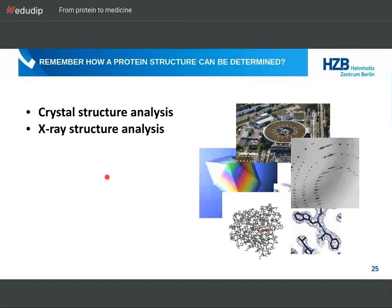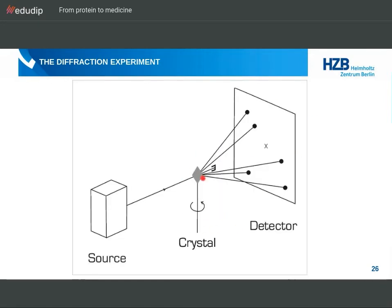Coming back to the two keywords — crystal and X-ray — we now bring them together. We take our protein crystal and shine synchrotron radiation of a particular wavelength on it. We use X-rays because the wavelength of X-rays is in the range of the distances between atoms in our sample. We want to find out where all the atoms are in our protein crystal, so we need radiation with a wavelength in the ballpark of the atom-atom distances, which happens to be X-rays. We shine X-rays on the sample, and on the other side we place a very expensive detector to measure what the protein crystal does with the waves.